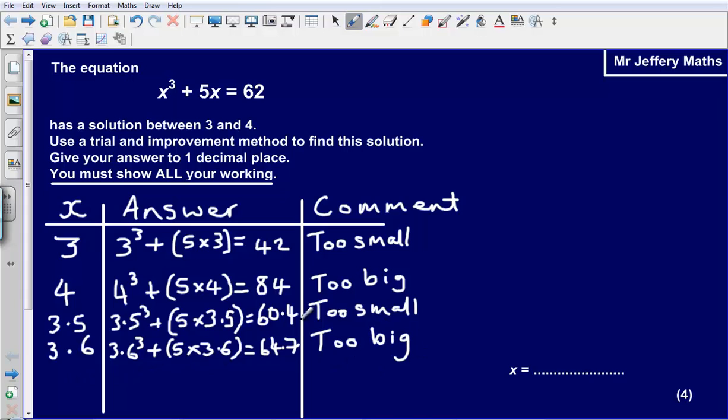Now what I can see here is that I have trapped my answer. So originally I knew that my answer was between 3 and 4. Now I know that my answer is between 3.5 and 3.6. I only need to give my answer to one decimal place. So I am going to give my answer to either 3.5 or 3.6. But I don't know which one of these I am going to choose yet.